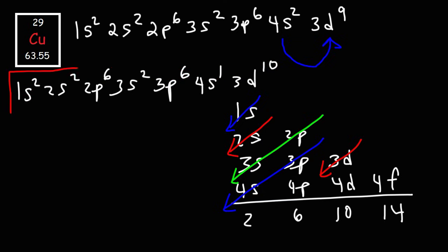So this right here is the electron configuration of the element copper. So those are two exceptions you need to be familiar with when writing electron configurations of elements. Thank you.